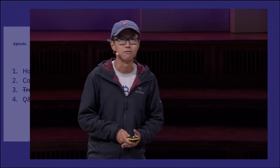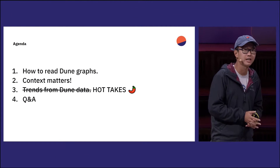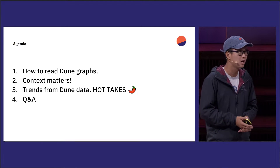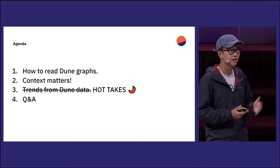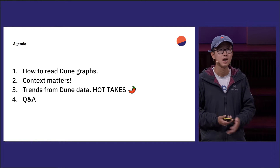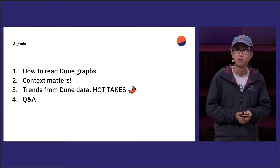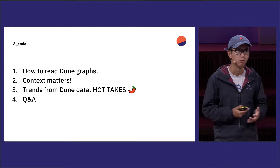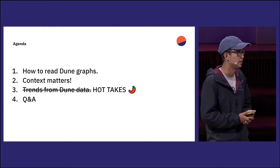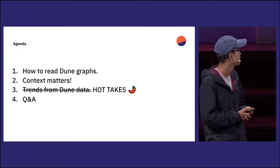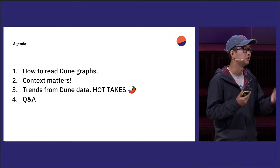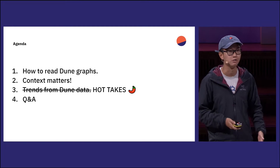So this is my agenda. First, I'll talk about looking at historical projects that are successful and what are common character traits looking at their Dune data — what patterns you see of successful projects. Then I'll talk about common pitfalls and what to watch out for when you look at Dune data and the context to think about. Then I'll give a couple of hot takes looking at Dune data, and then I'll leave it to Q&A.